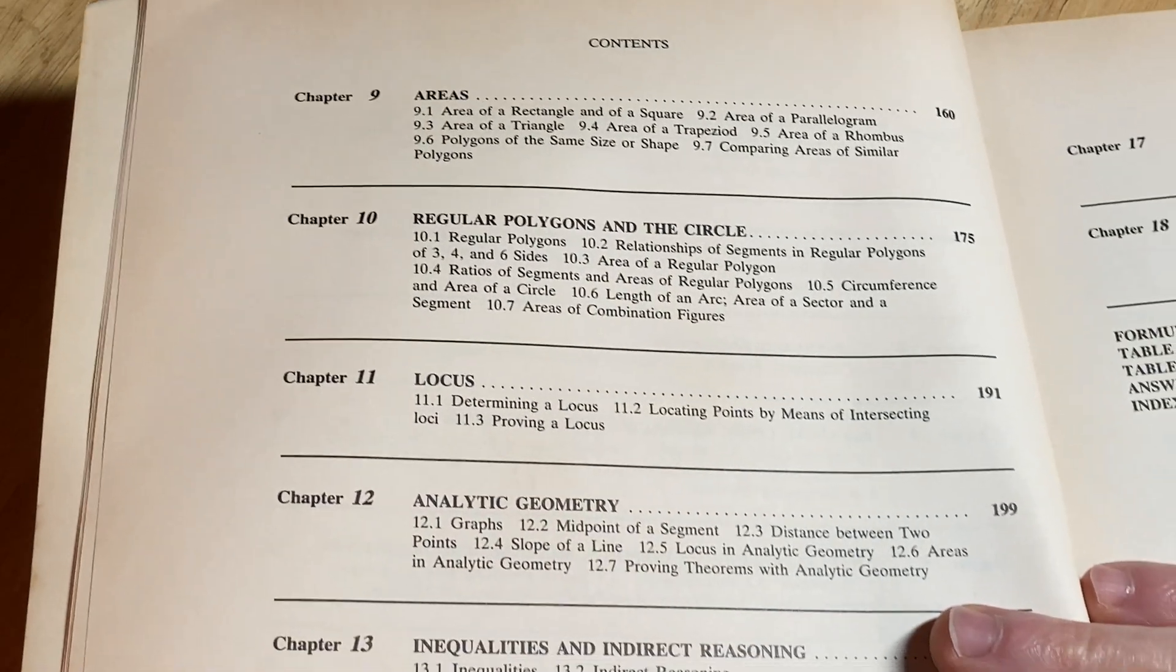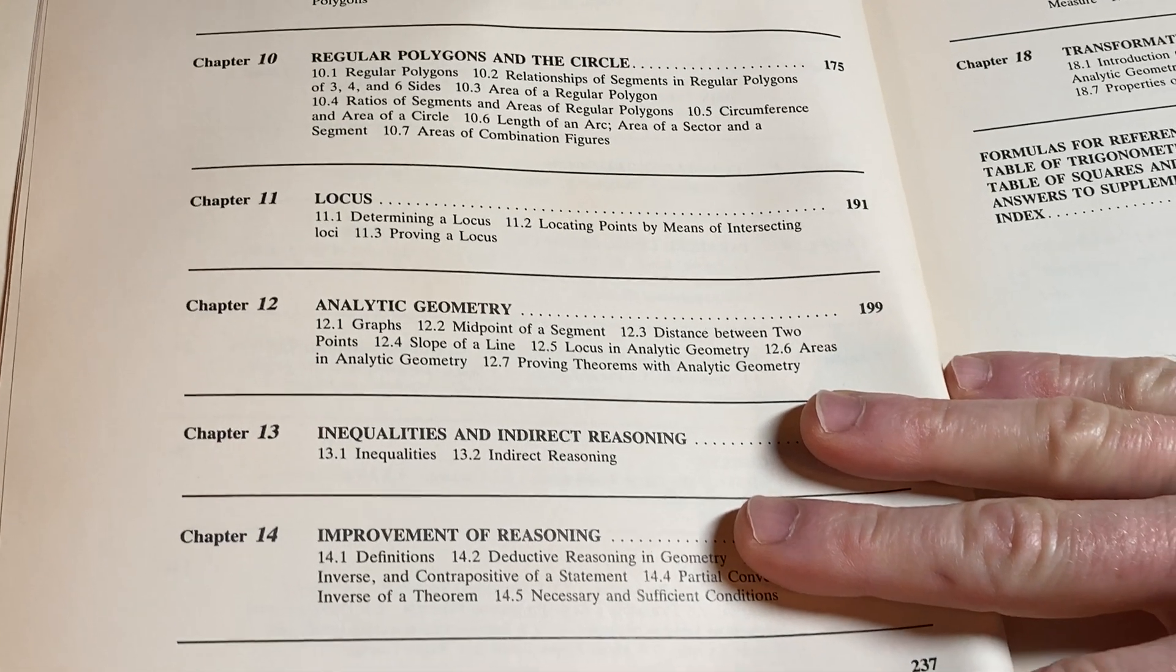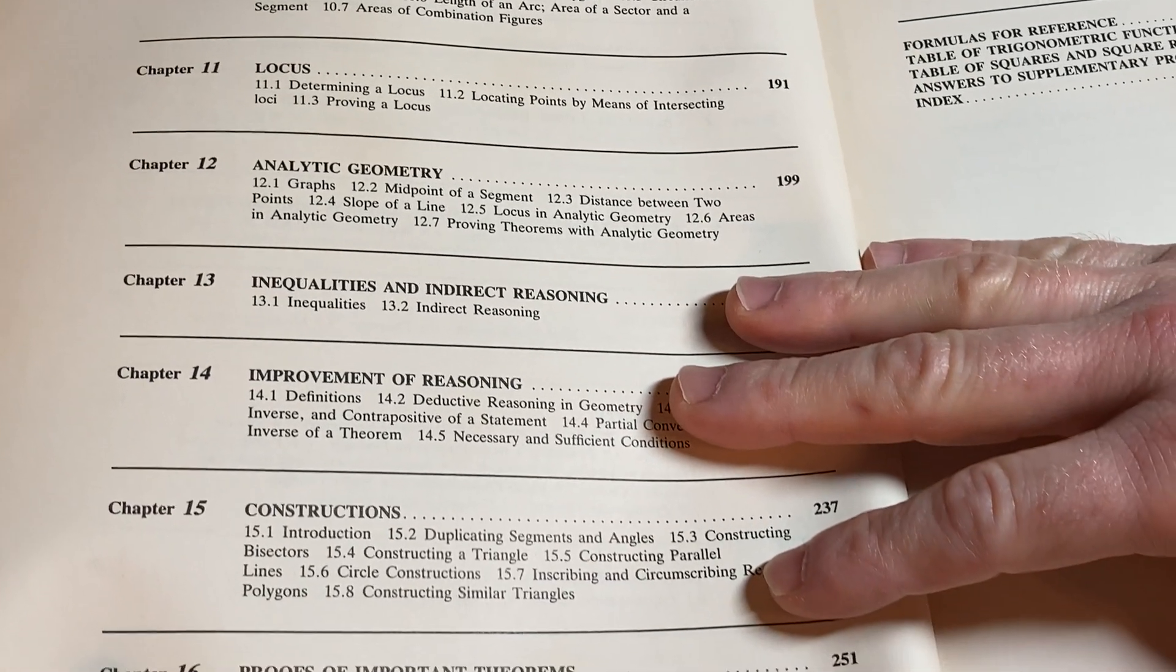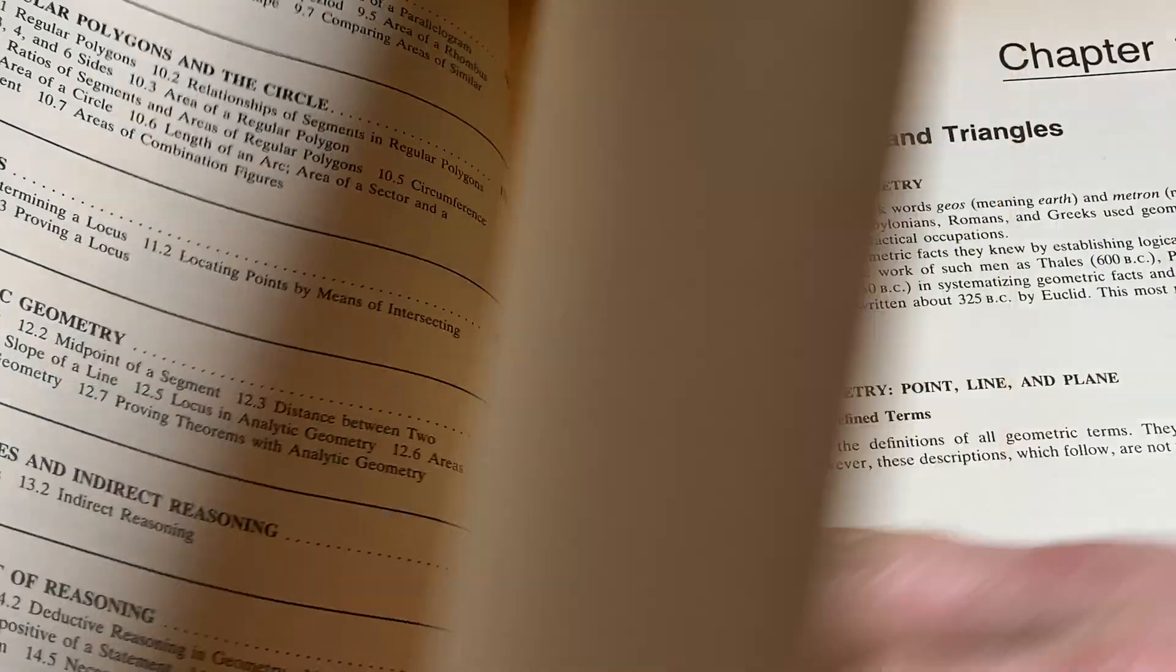And then it's got areas. So, it's got a lot of stuff, right? It's got a lot of mathematics. Analytic geometry, inequalities, some theorems. We've got some more stuff here. So, tons of mathematics in a book like this.